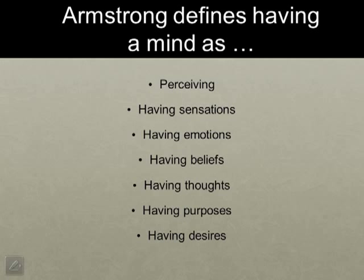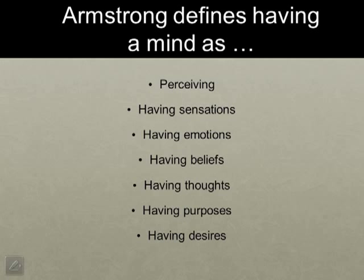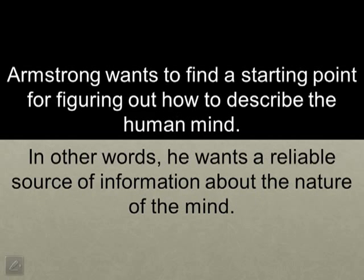He then goes on to explain what his purpose in this essay is. He's agreed that humans have minds, but his aim now is to explain the nature of the mind — to describe exactly what the human mind is like. So we do all these things like perceiving and having emotions, but what exactly does that mean? Does that mean we just have a brain? Is the mind exactly the same thing as the brain, or is it something else?